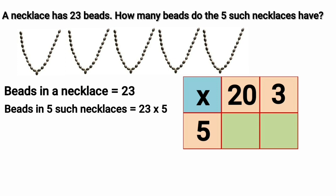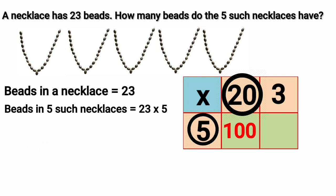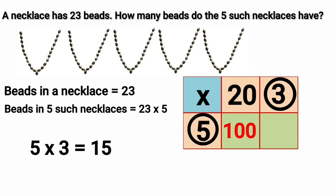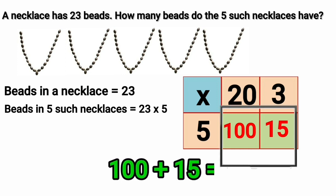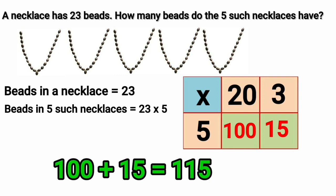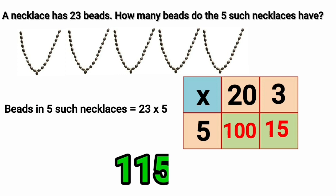Now we will multiply 5 and 20. 5 multiplied by 20 is equal to 100. And 5 multiplied by 3 is equal to 15. Now add 100 and 15. 100 plus 15 is equal to 115. So 5 necklaces have 115 beads.